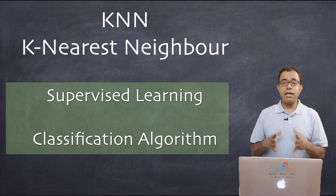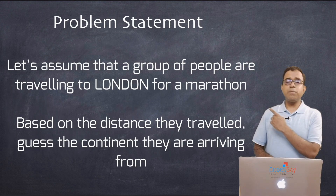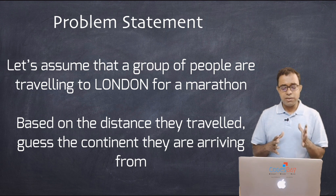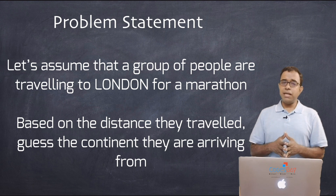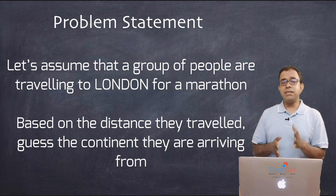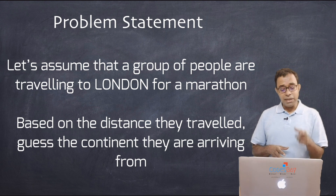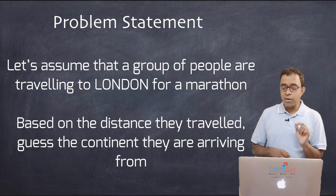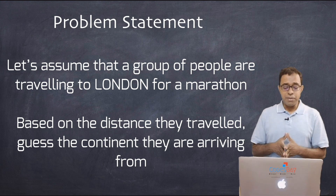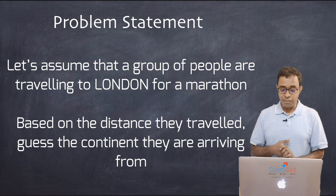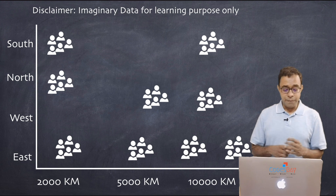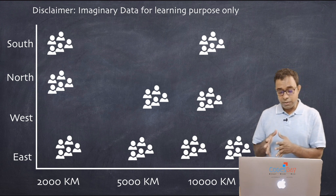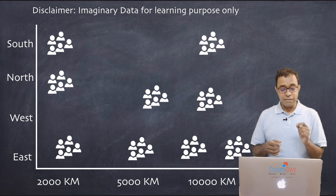To understand this algorithm, let's come up with a problem. The problem statement is: assume that a group of people are traveling to London for a marathon. Let's also assume that we have the data of the participants from last year. The problem states that based on the distance they traveled, we need to guess the continent they are arriving from. We have collected data from 2000 kilometers to 10,000-plus kilometers in east, west, north, and south directions.